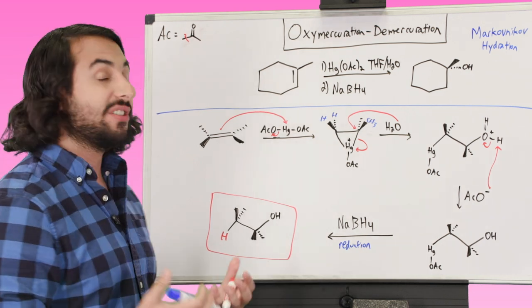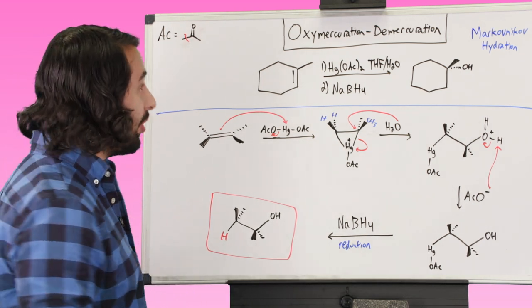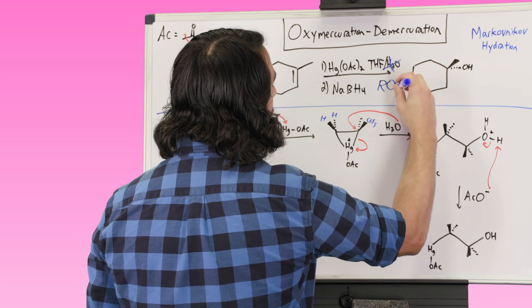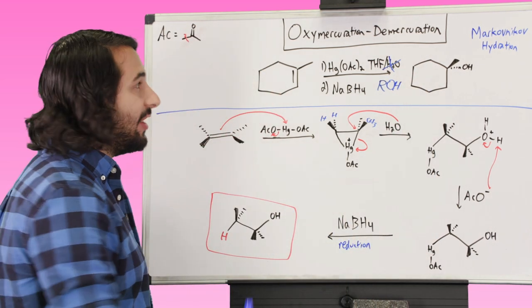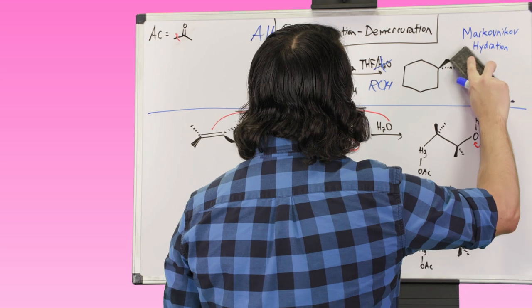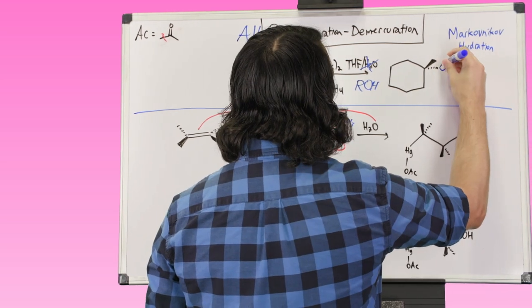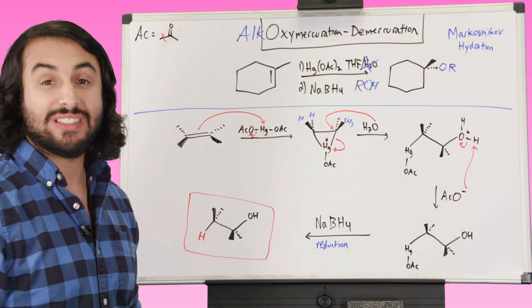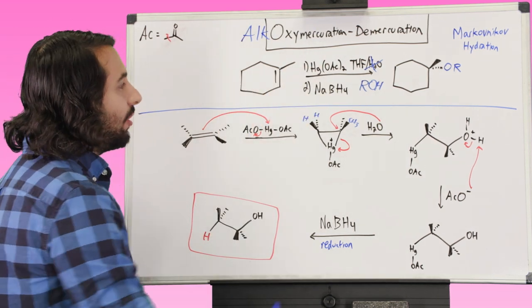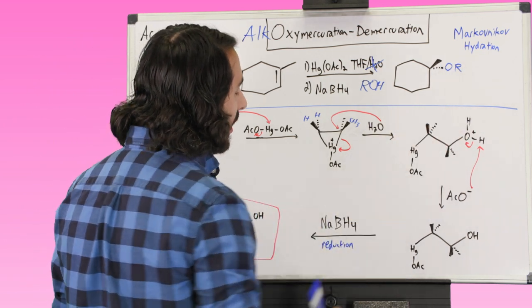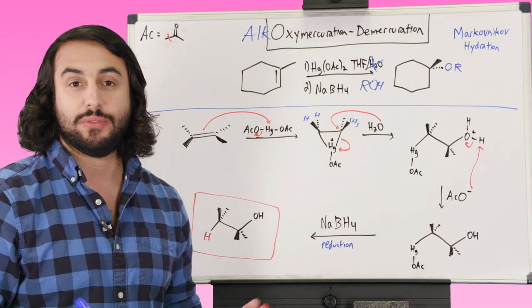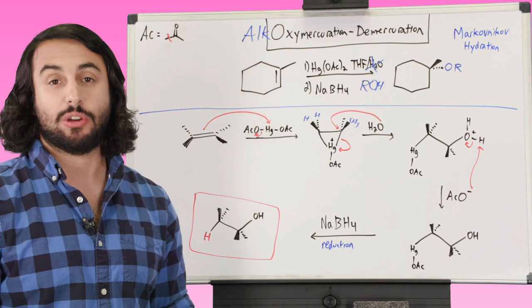Another thing to be aware of is a variation called alkoxymercuration-demercuration. All we need to know is that if we run this in alcohol — ROH instead of H2O — that is what makes it alkoxymercuration-demercuration. That will simply give us OR instead of OH. Everything would be the same mechanistically; it would still be Markovnikov, but we'd have an alkoxy group because we ran this in alcohol. That is a method of ether synthesis.